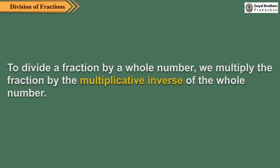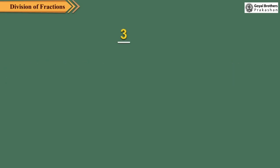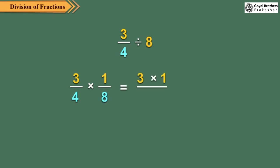To divide a fraction by a whole number, we multiply the fraction by the multiplicative inverse of the whole number. Let us divide 3/4 by 8. Since 1/8 is the multiplicative inverse of 8, so we get...